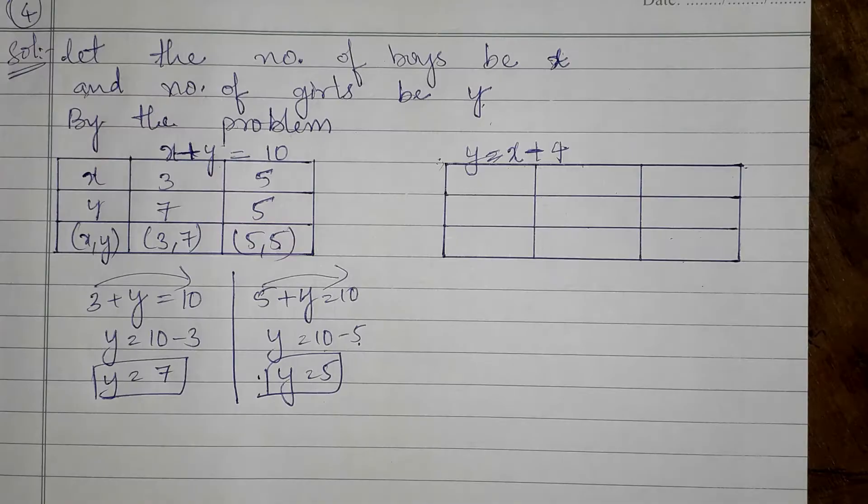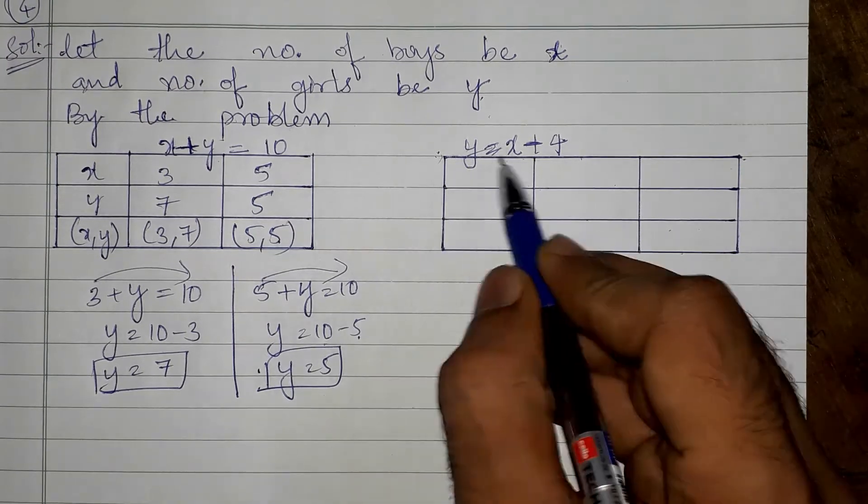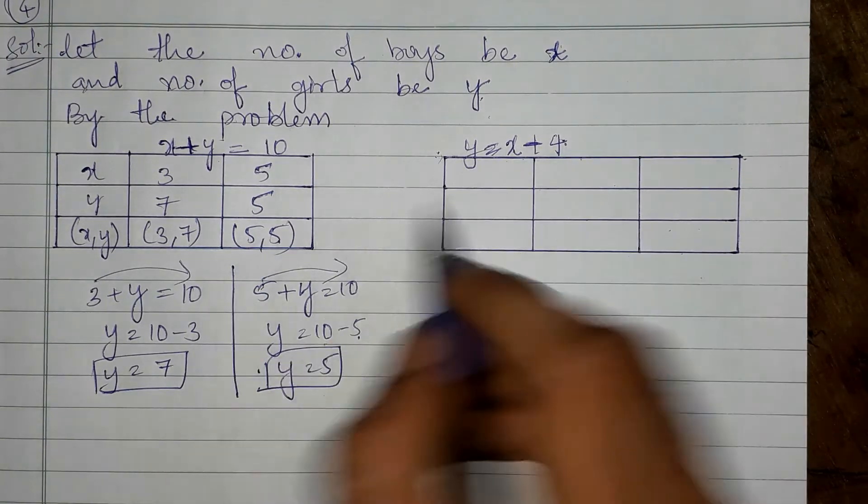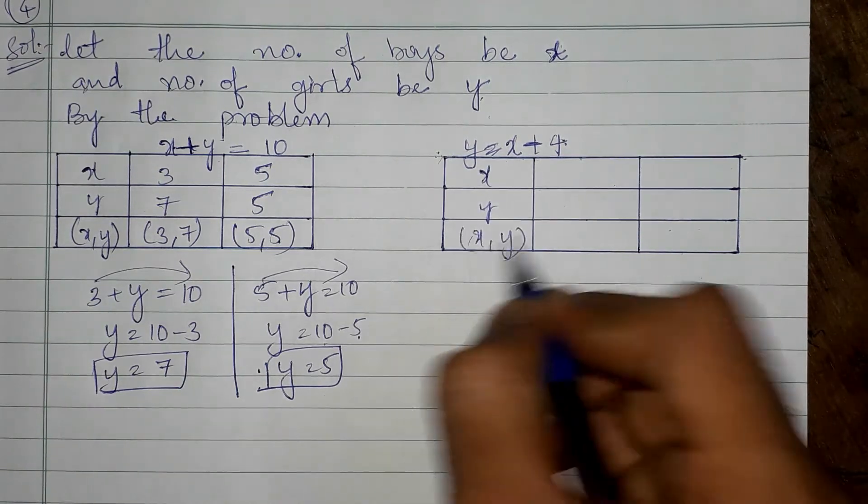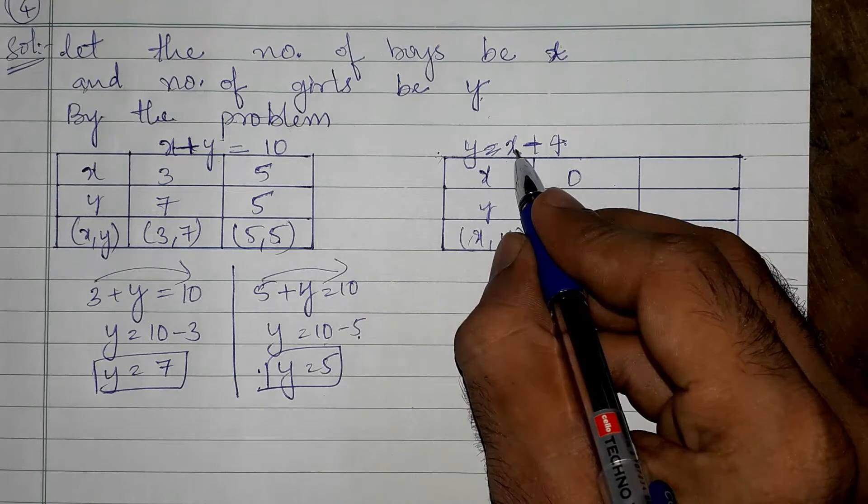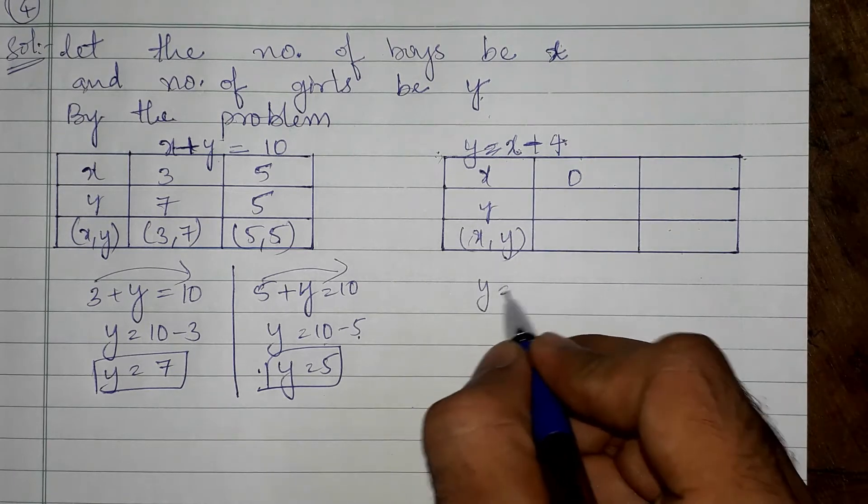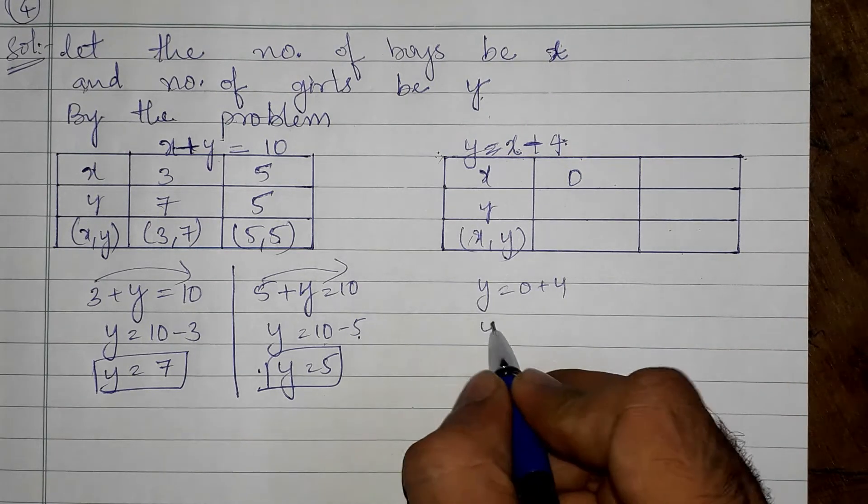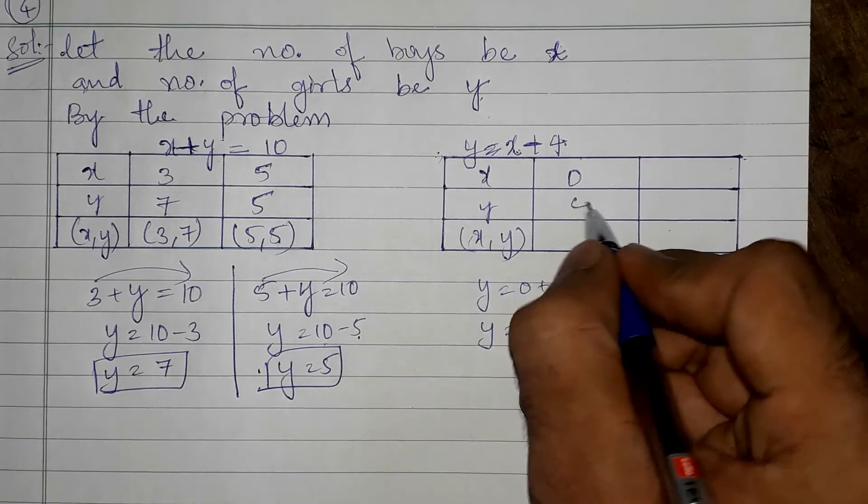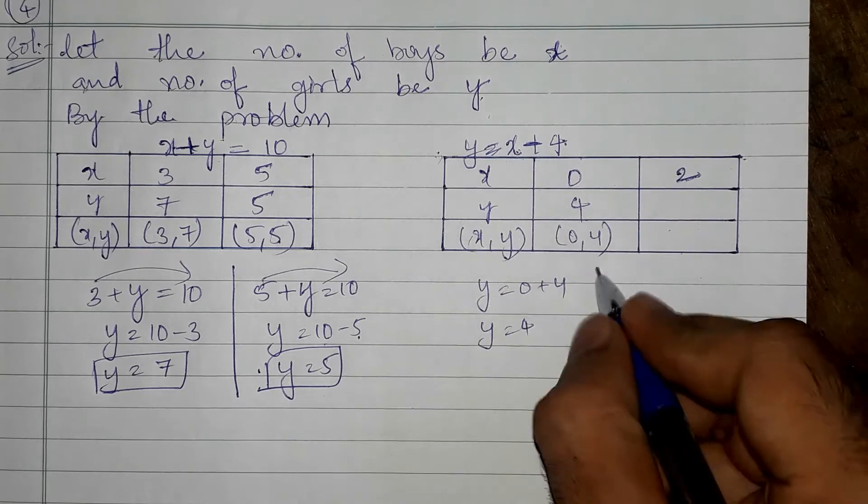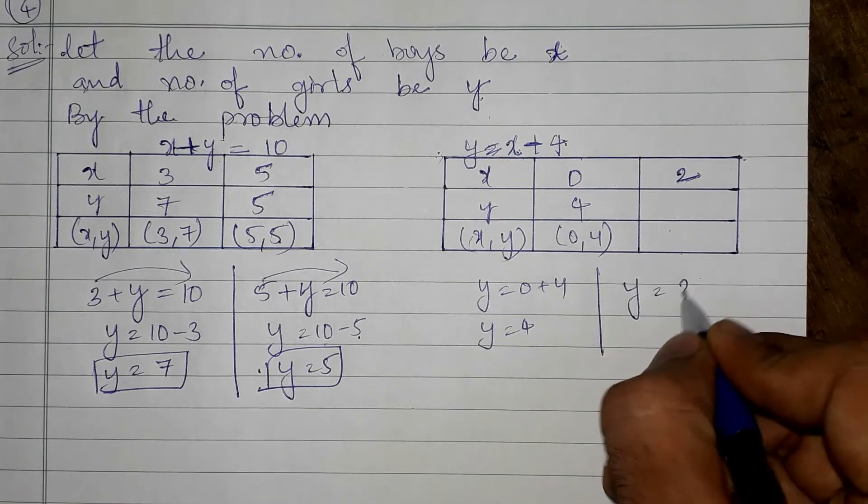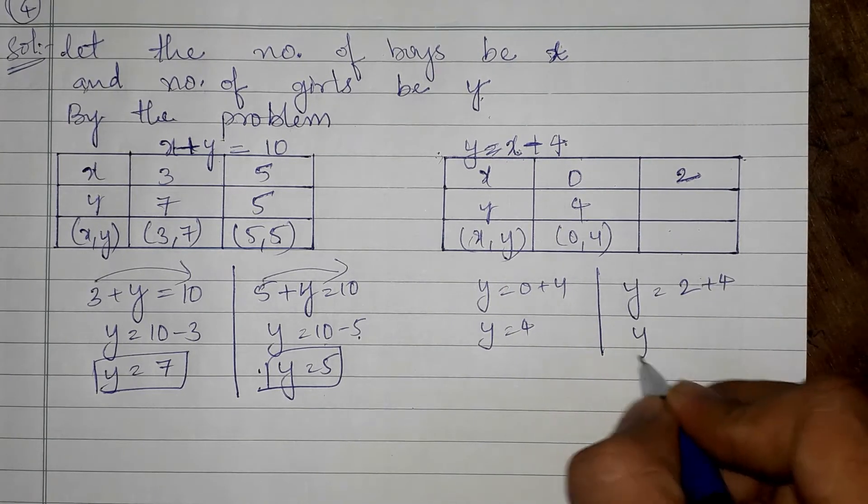Let us draw the next box. Next, in this box y is equals to x plus 4, this equation is there. So we can take x, y, and x comma y. If we are substituting 0 in place of x, we get 0 plus 4, that is y equals 4, so 0 comma 4. Next if we substitute 2 in place of x, we get y equals 2 plus 4, so y equals 6, so 2 comma 6.